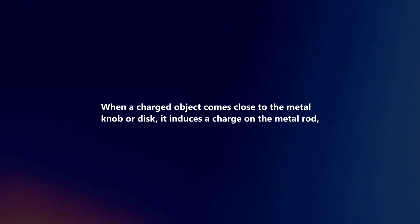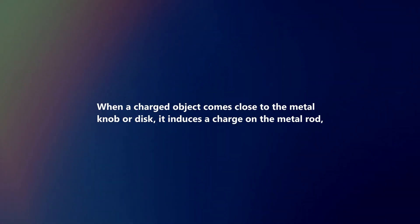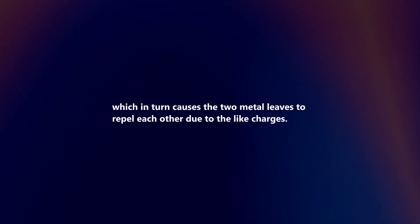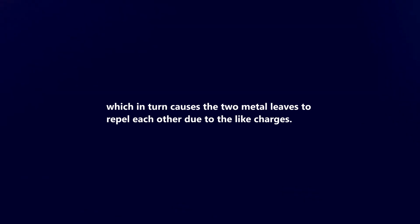When a charged object comes close to the metal knob or disc, it induces a charge on the metal rod, which in turn causes the two metal leaves to repel each other due to the like charges.